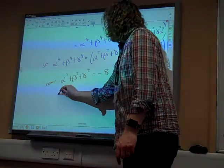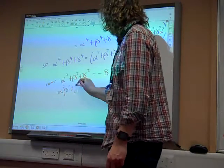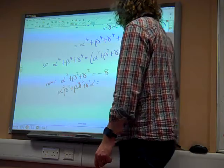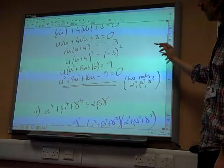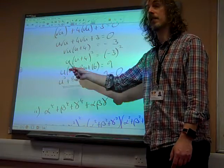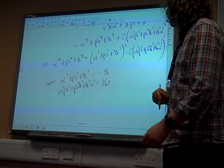Alpha squared beta squared plus beta squared gamma squared plus gamma squared alpha squared. That's our next one along. So, that is 16 over 1. So, that bit is equal to 16.